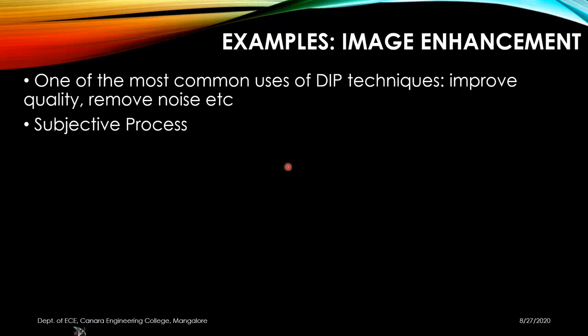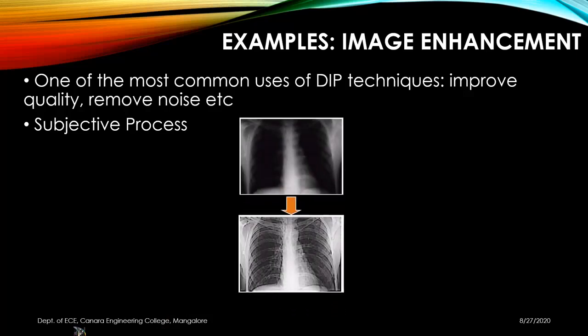One of the most common uses of DIP techniques is to improve the quality of the image by removing noise or sharpening it — basically making it visually more pleasant. This is a subjective process; it depends on the user and varies between users. One person might feel a certain level of enhancement is enough while another may want to improve it further. Still, this is the most widely used technique in image processing.